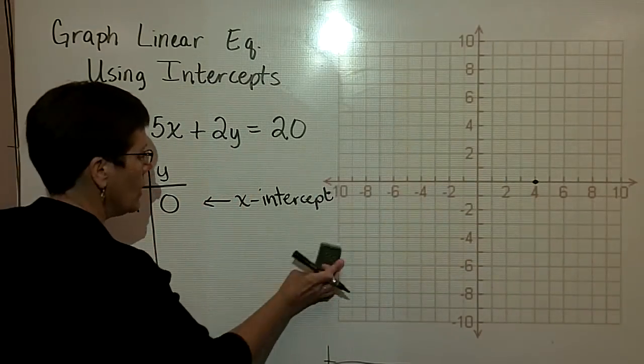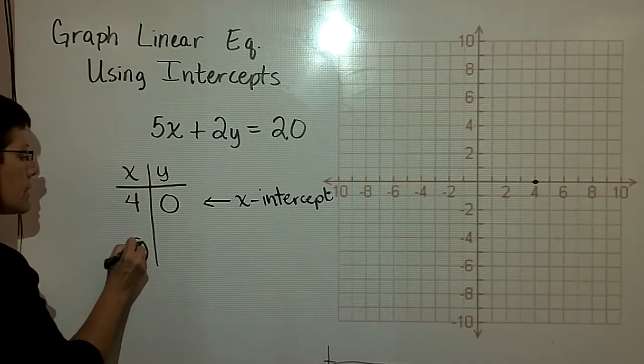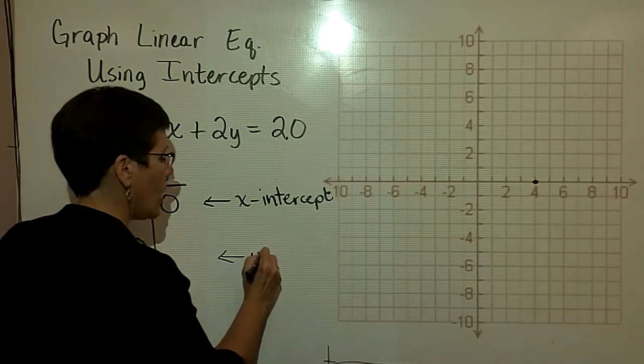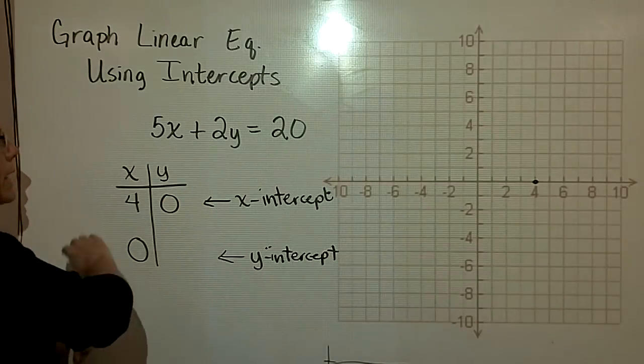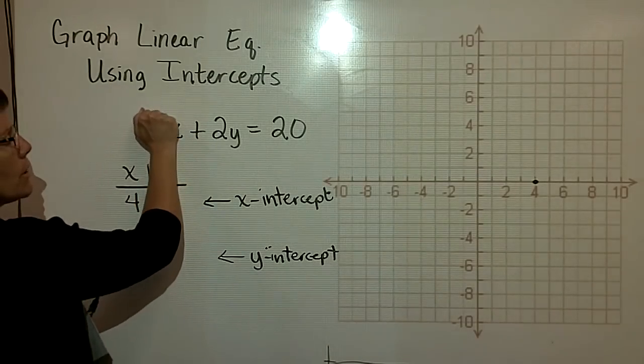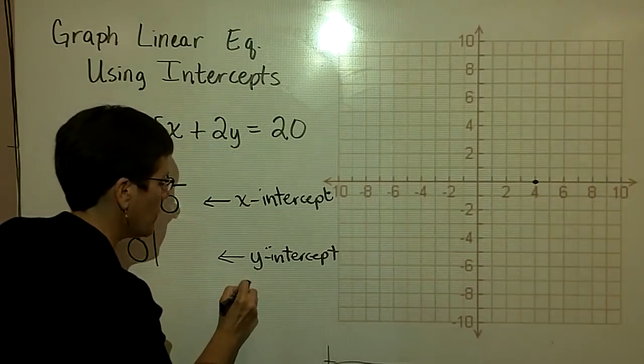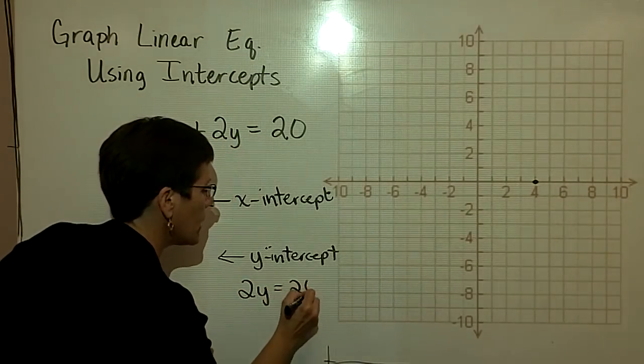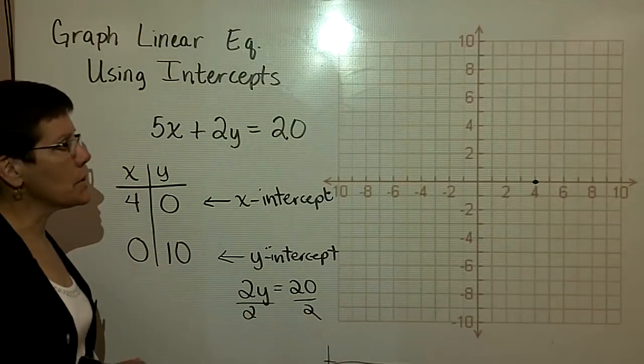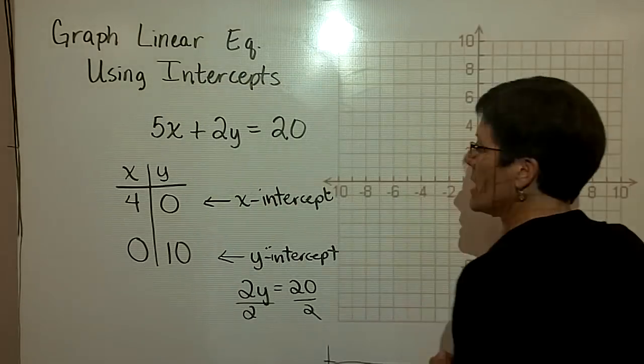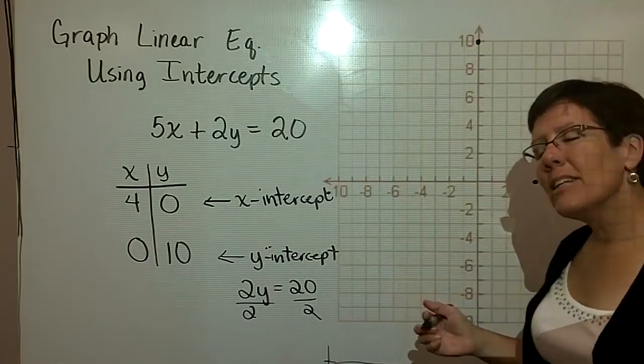Let's go ahead and find now what's called the y-intercept, and that's when x is zero. So let's write that down. That's called the y-intercept. And so when x is zero, 5 times zero, when that's gone, I'm left with 2y equals 20. 2y equals 20. And when I divide both sides by 2, I find out that y has got to be equal to 10. So I'll come on over here, and when x is zero, y is 10, and I have the y-intercept.